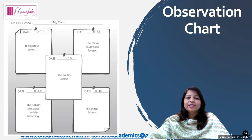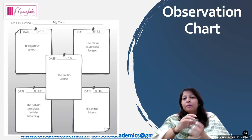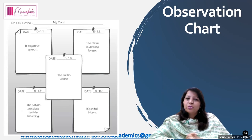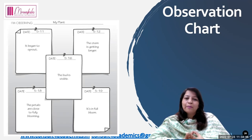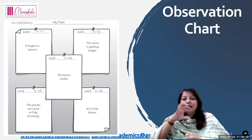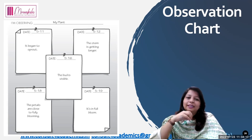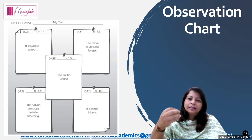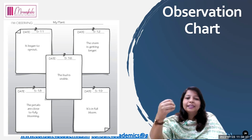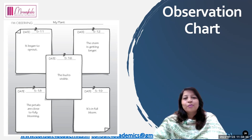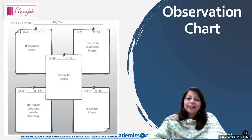Here is the observation chart. Children have to write about any kind of experiment or hands-on activity they are doing that will continue for a few days, and note their observations. For example, if they are growing saplings: it began to sprout on this date, then the stem is getting longer, the bud is visible, the petals are close to fully blooming, and it's in full bloom. They should keep track of different changes they are observing with date and time.